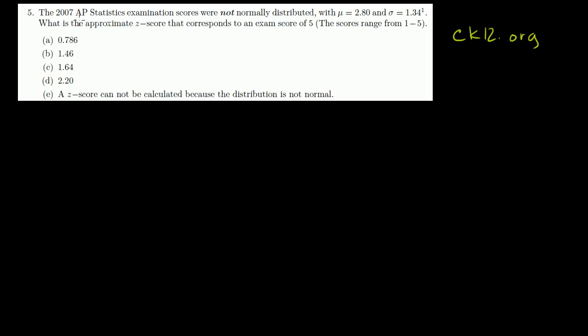They're saying the 2007 AP Statistics examination scores were not normally distributed, with a mean of 2.8 and a standard deviation of 1.34. What is the approximate z-score that corresponds to an exam score of 5? So we really just have to figure out how many standard deviations is 5 from the mean.